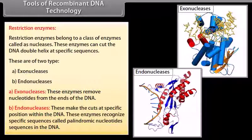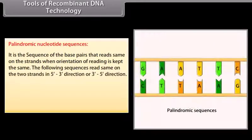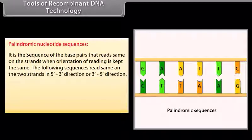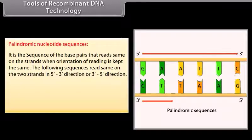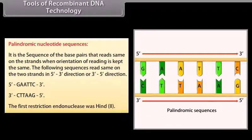These make the cuts at specific position within the DNA. These enzymes recognize specific sequences called palindromic nucleotide sequences in the DNA. Palindromic nucleotide sequences. It is the sequence of the base pairs that read same on the strands when orientation of reading is kept the same. The following sequences read same on the two strands in 5 to 3 direction or 3 to 5 direction. 5-G-A-A-T-T-C-3, 3-C-T-T-A-A-G-5. The first restriction endonuclease was hind 2.